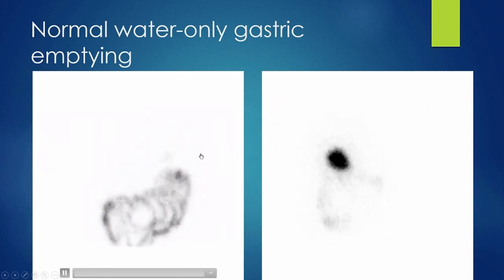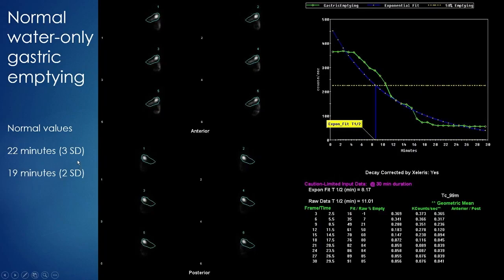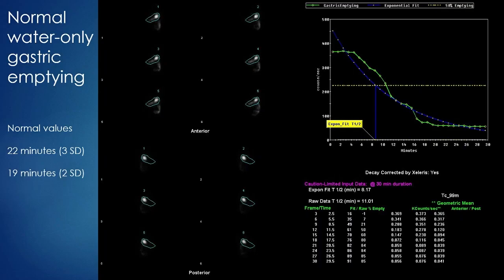Here is a normal water emptying study — the tracer gets in and gets out very quickly over 30 minutes. Processing is similar but instead of percent retention we use a half-emptying time. This patient had a slight lag phase — a fundal accommodation time — before an exponential curve. Both the exponential best-fit curve and raw data are well within the normal range. There's no single settled normal range; within two standard deviations gives about 19 minutes, or for higher specificity and lower sensitivity, three standard deviations gives about 22 minutes.